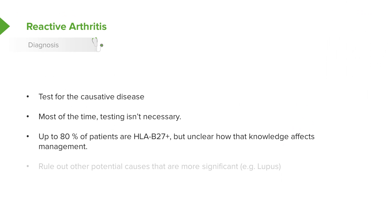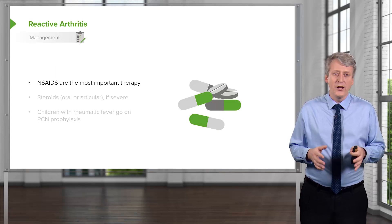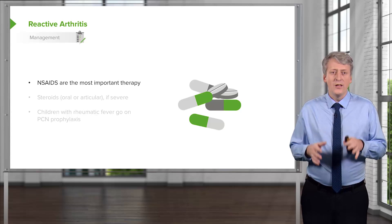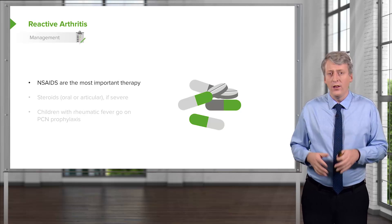Up to 80% of patients with reactive arthritis are HLA-B27, but knowing someone is HLA-B27 probably isn't particularly beneficial. If they were to go on to develop ankylosing spondylitis, we would be testing them anyway, so it's unclear that knowing their HLA type is helpful. We do like to rule out other more significant causes — through history and physical exam we can usually rule out lupus, an infected joint, or other conditions requiring more aggressive therapy. The good news is these children usually get better reasonably well and have a great prognosis.